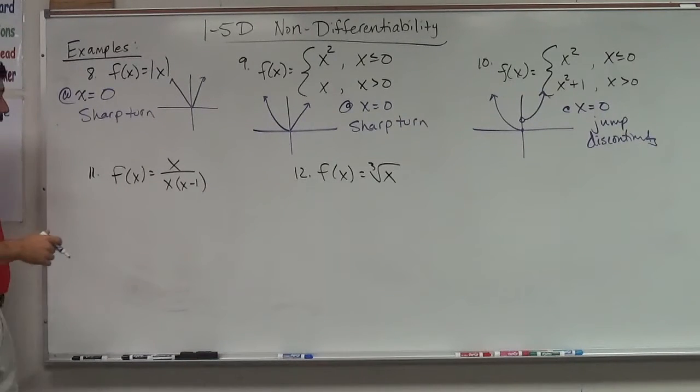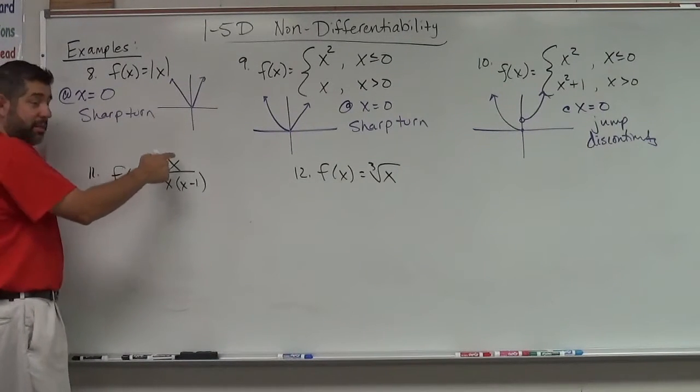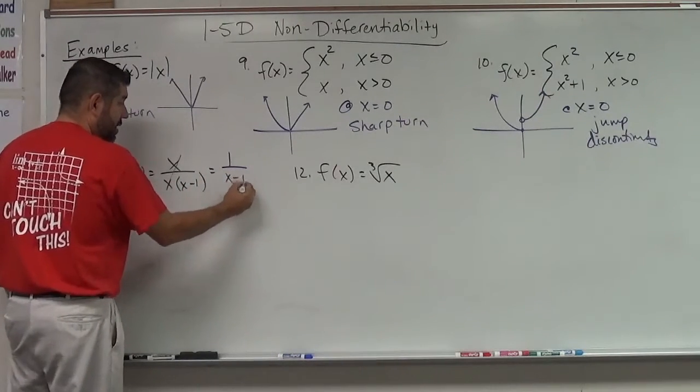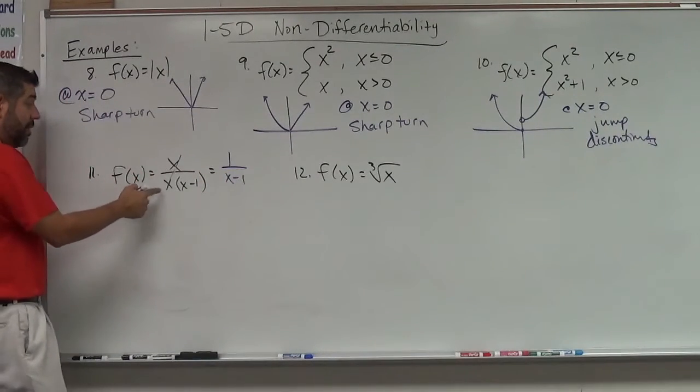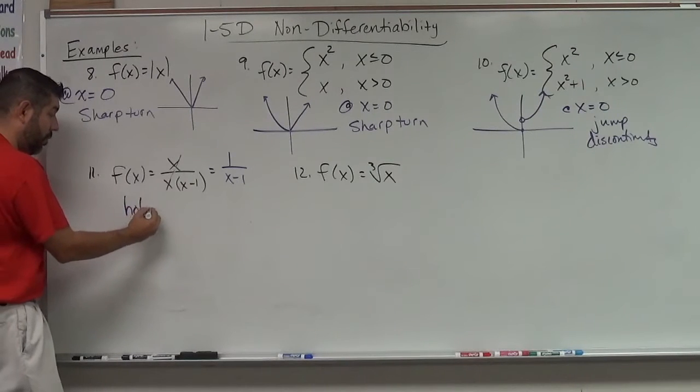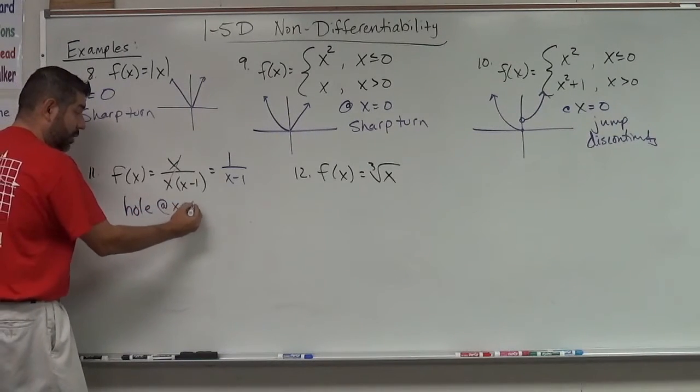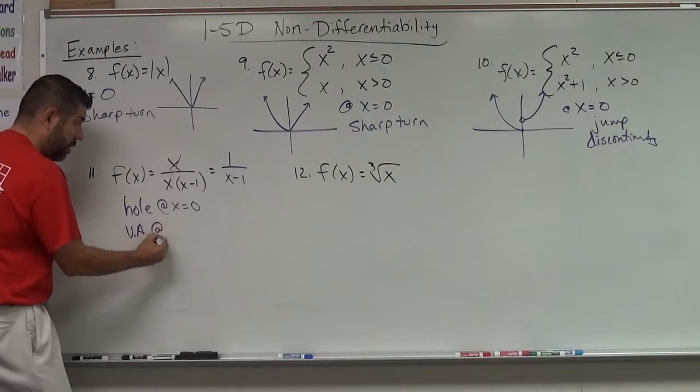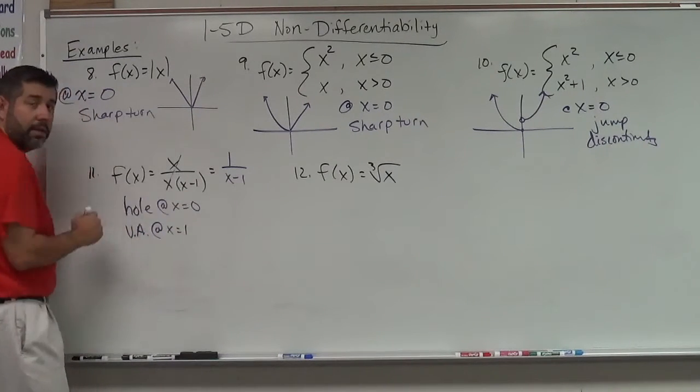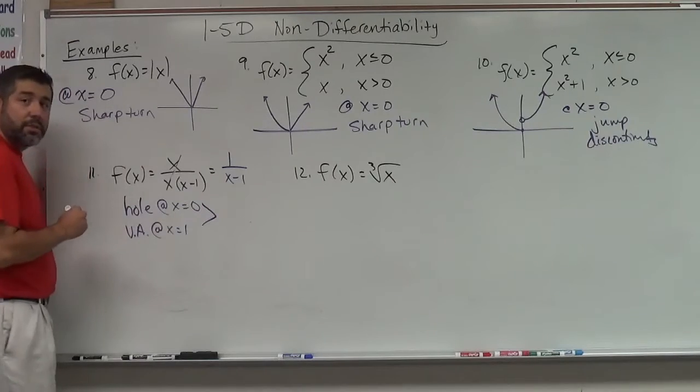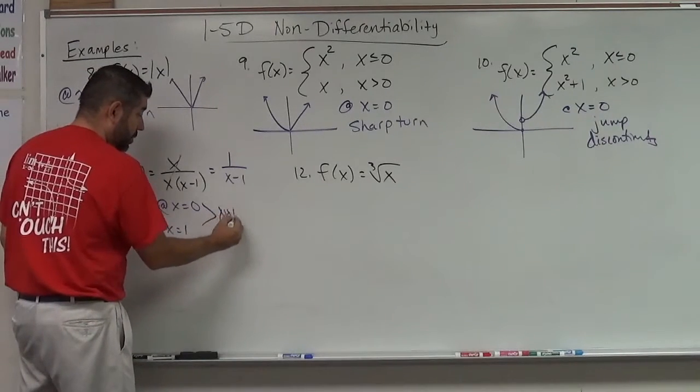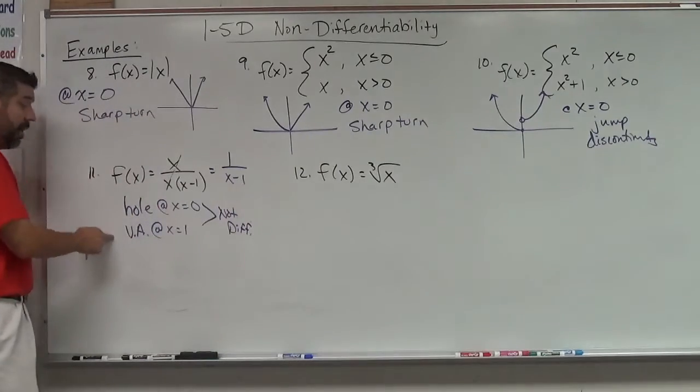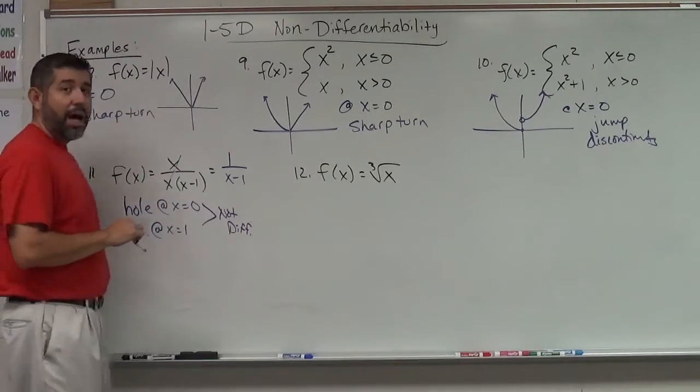Okay, what about f of x equals x over x minus 1? Well, we can see that we can cancel these x's out. So remember that any time we can get rid of that, we have a hole. So we have a hole at x equals 0 and we have a vertical asymptote at x equals 1. So both of these places are not differentiable because we have a hole and a vertical asymptote. They're not continuous there.